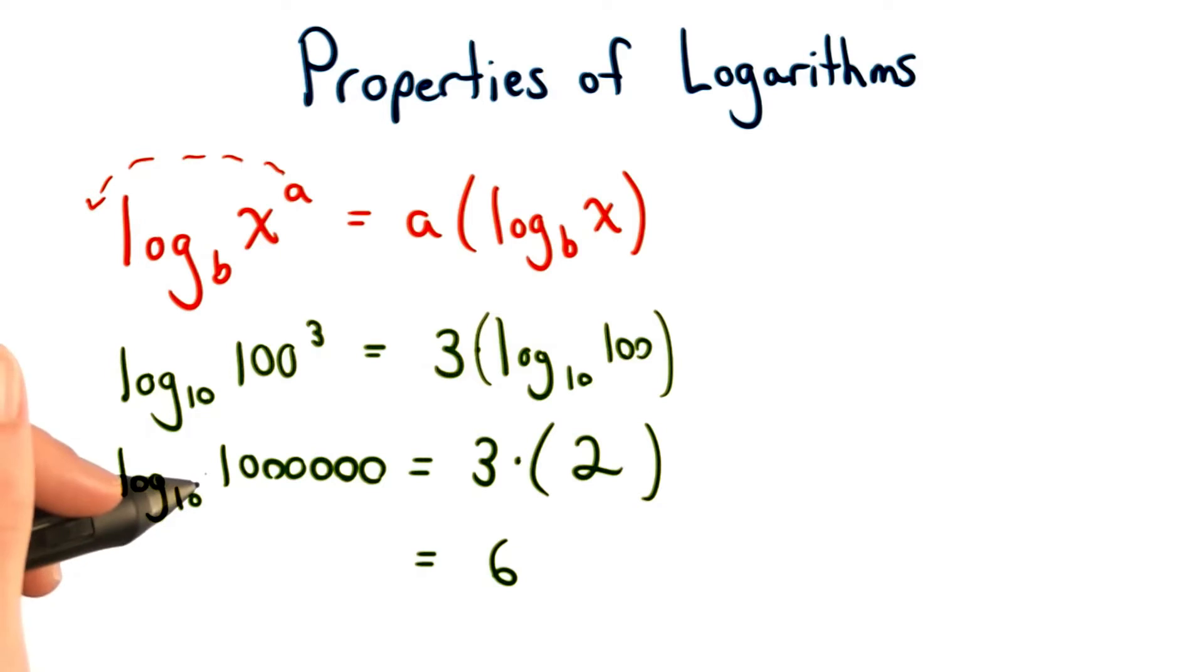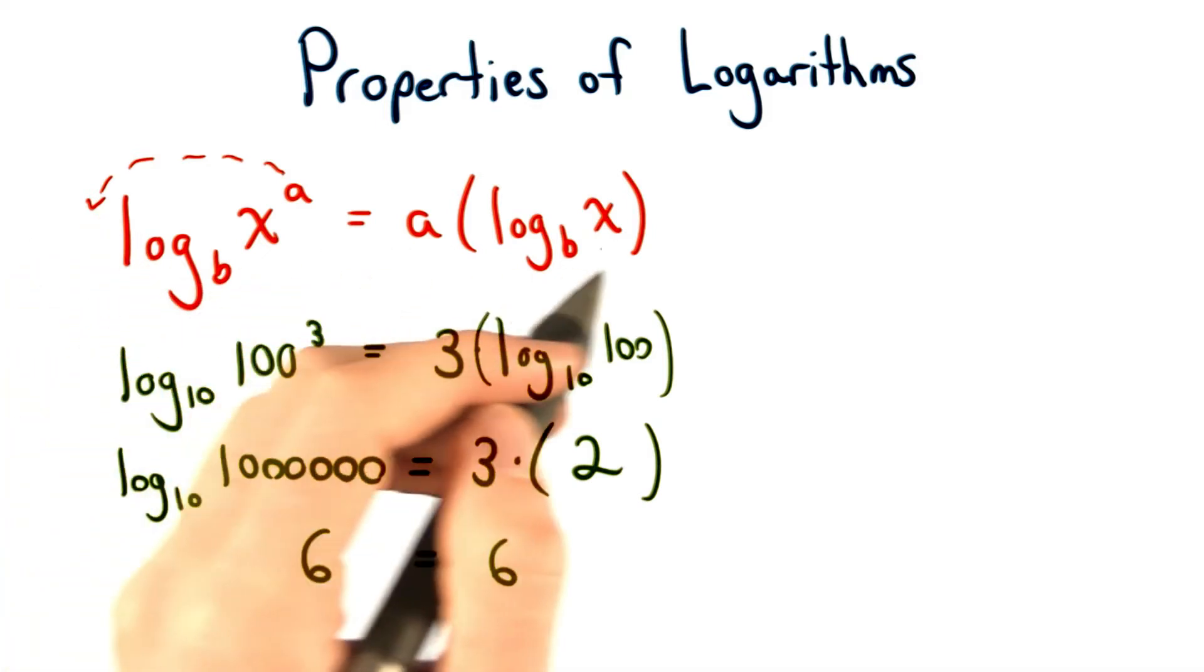We'll have log base 10 of a million. Well, we know a million is 1 followed by 6 zeros. So that means we have to raise 10 to the sixth power in order to get a million. So yes, 6 equals 6. This is just one example of why this log property holds true.